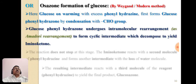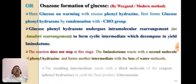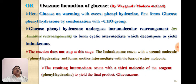The second step is different in the Wegand method. This glucose phenylhydrazone undergoes intramolecular rearrangement known as the Amadori rearrangement, forming a cyclic intermediate which decomposes to yield an iminoketone. This reaction does not stop at this stage — the iminoketone reacts with the second molecule of phenylhydrazine, forming another intermediate with loss of water. This intermediate finally reacts with the third molecule of phenylhydrazine to form glucosazone.